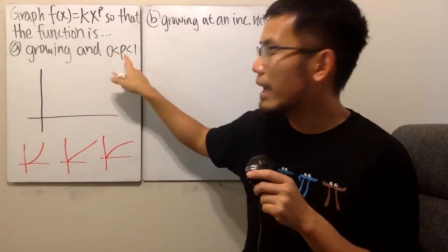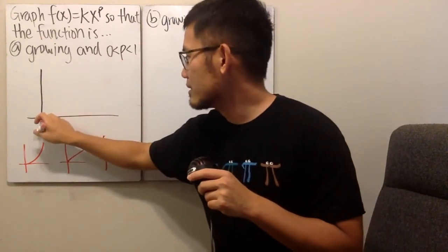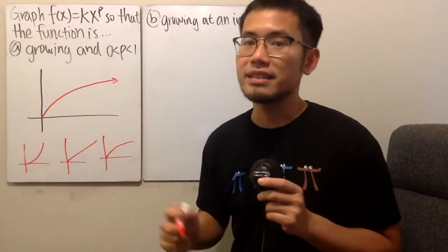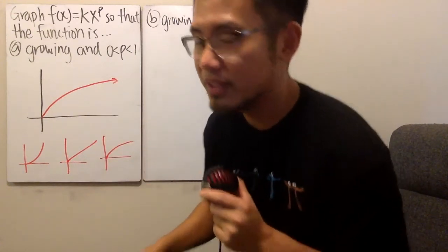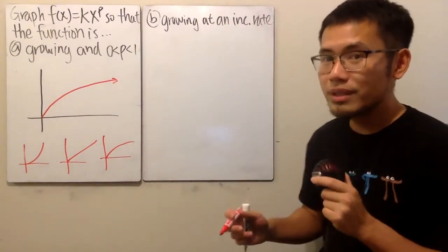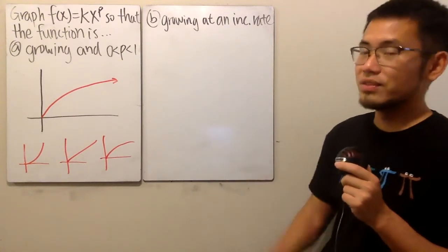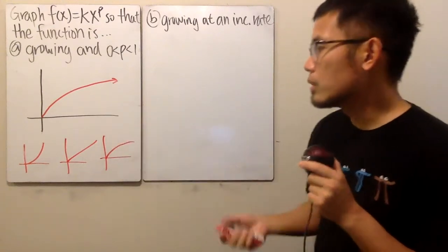So the answer is just going to be something like this, such as the square root of X. We did that in the previous video. Likewise, also the cube root of X, because it's the one-half power and also the one-third power. This will be the answer for that.